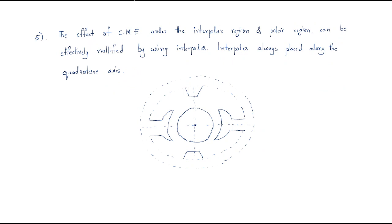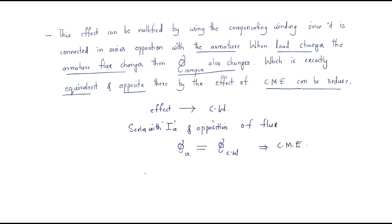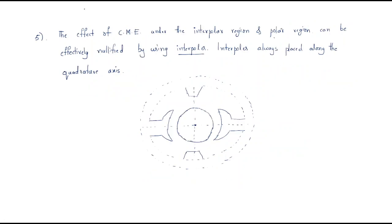The effect of cross-magnetizing effect under the interpolar region and polar region can be effectively nullified by using the interpoles. Cross-magnetizing effect is generally caused by load changes — this is the main reason. We have two regions: the interpolar region and the polar region, and both can be effectively nullified using interpoles.